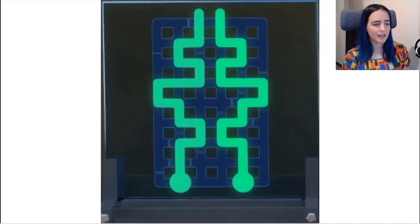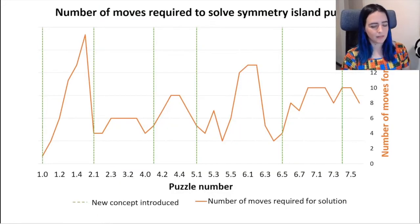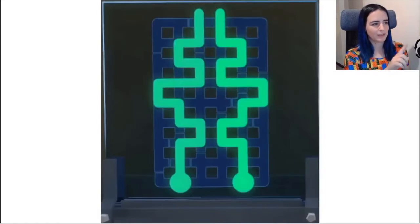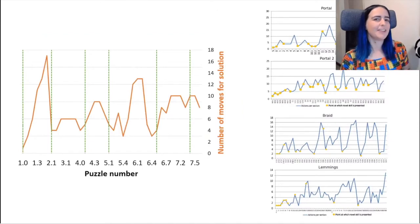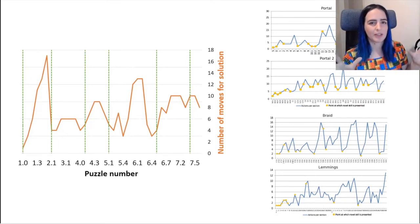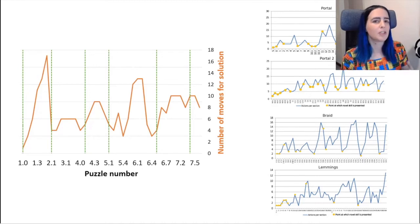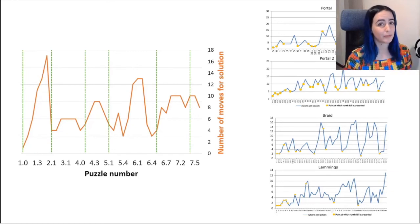I tried this with The Witness — counting each time the line turned a corner as one move, so one puzzle would be about 14 moves. The graph I came up with was surprising and concerning: it doesn't look like the others, and in fact suggests the first few puzzles of the symmetry island sequence near the start of the game are the most difficult — when I know for a fact they are among the easiest. So this measure did not work for The Witness, and I tried to find one that did.